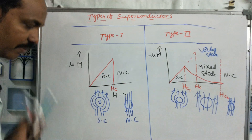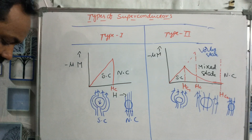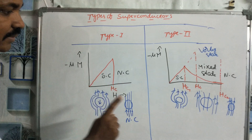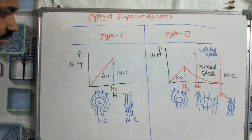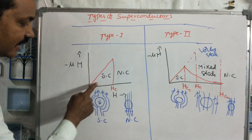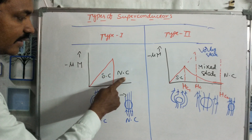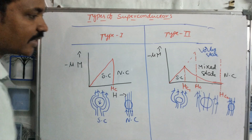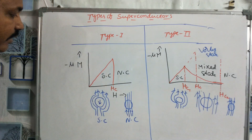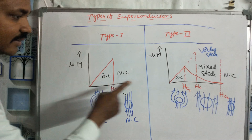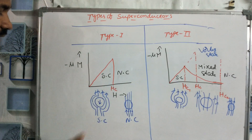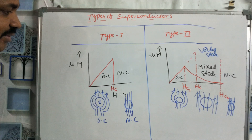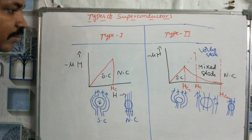The key differences: Type 1 has only one critical field Hc, while Type 2 has two critical fields Hc1 and Hc2. Before Hc, Type 1 is superconducting; after Hc, it is a normal conductor. For Type 2, before Hc1 it is superconducting, between Hc1 and Hc2 is mixed state, and after Hc2 it is normal. Type 1 has no mixed state; Type 2 has a mixed state. Type 1 follows the perfect Meissner effect; Type 2 does not follow the perfect Meissner effect.